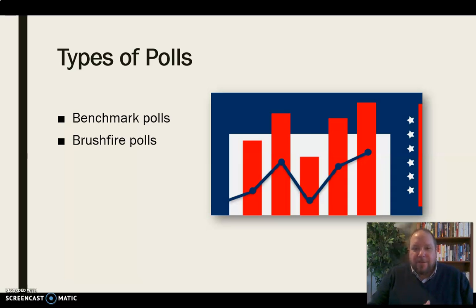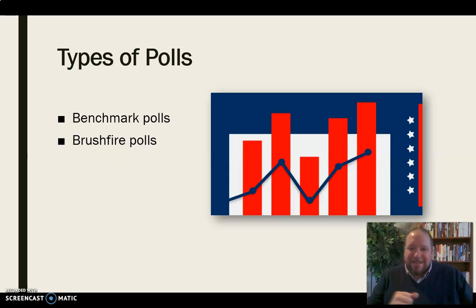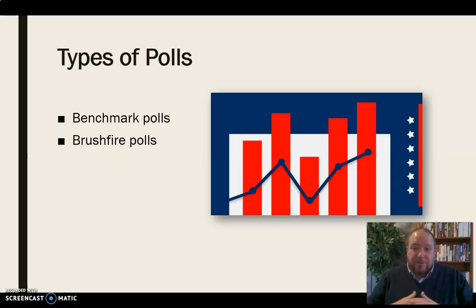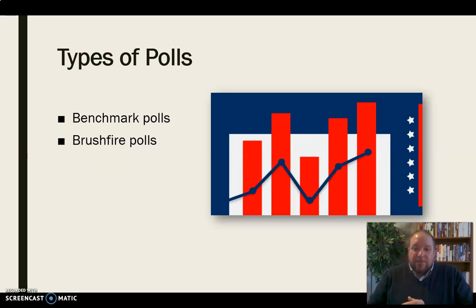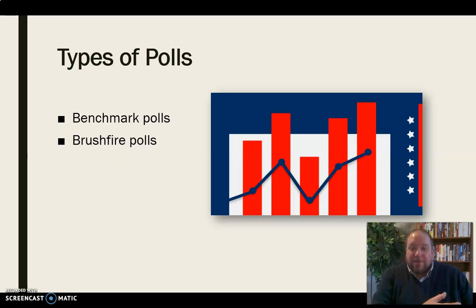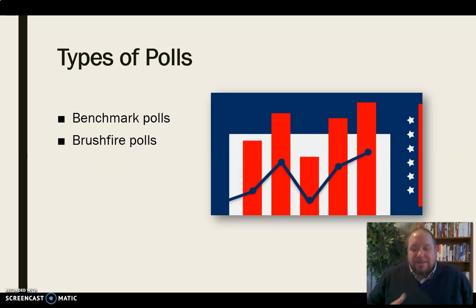Then throughout the campaign, you may issue what are called brushfire polls, where you're kind of taking the temperature on different things, maybe on different issues. A lot of times you see this used in terms of favorable versus unfavorable — do you find this candidate's position favorable, do you prefer them over other candidates? These are taken sporadically throughout to update where you're at relative to the benchmark.